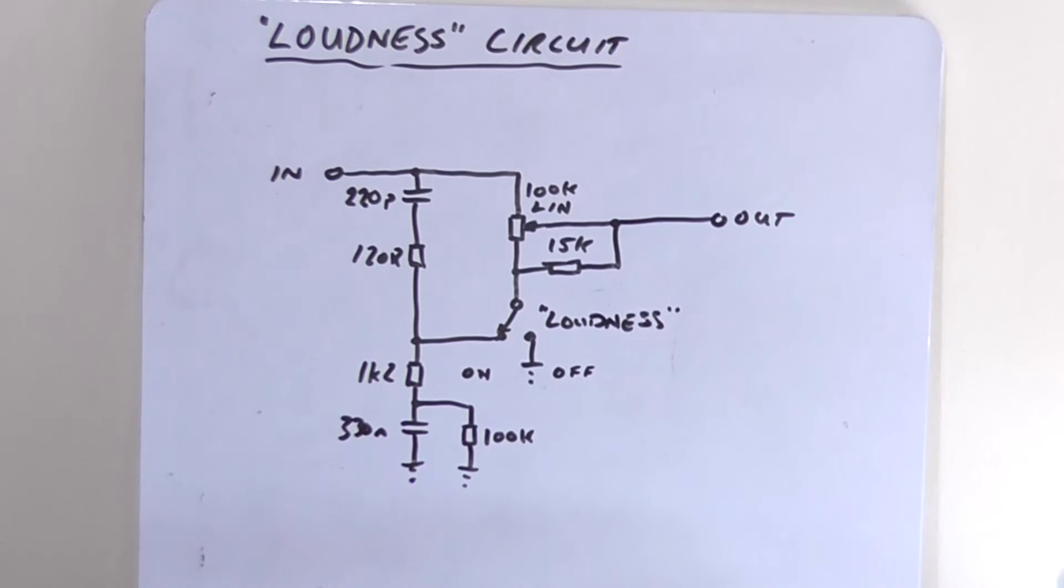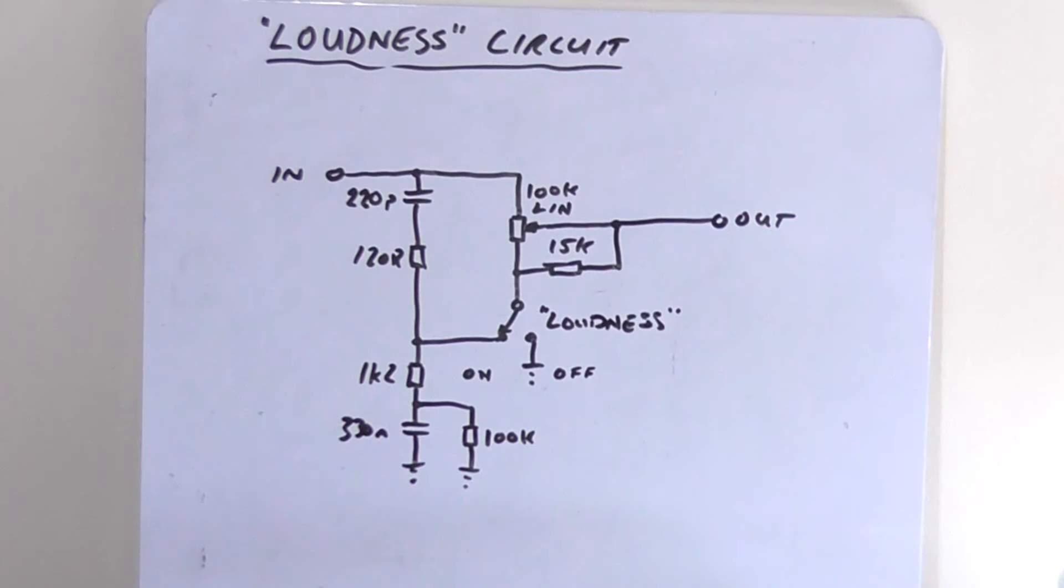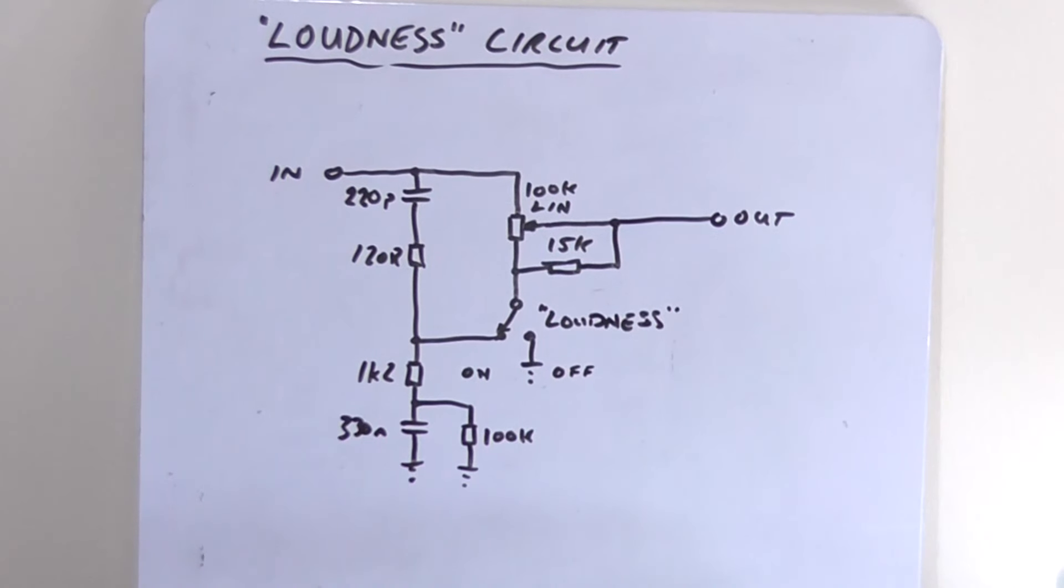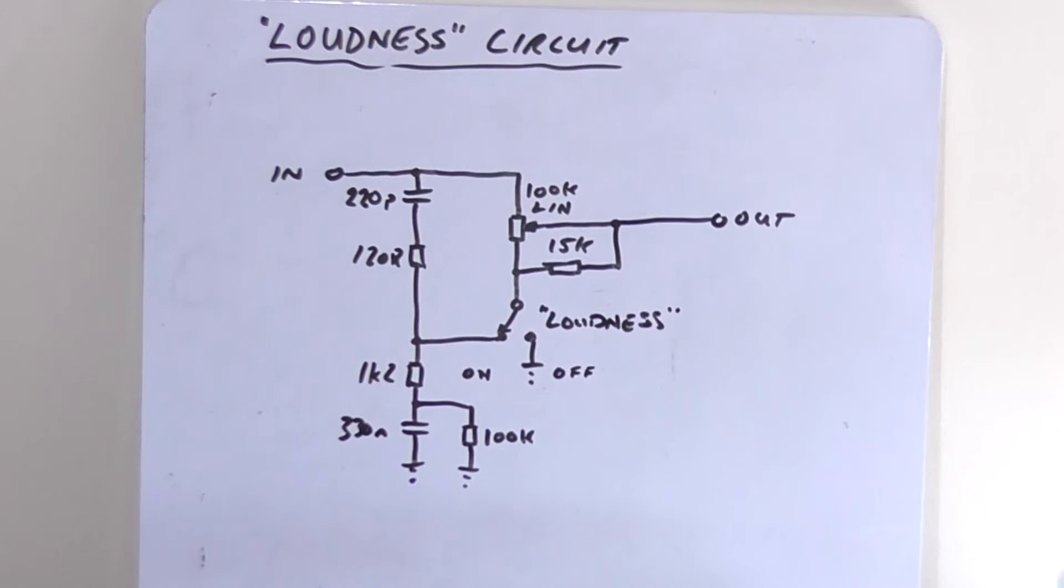Greetings, the Astro 30 here yet again with another experimentation video. Today I'm going to be looking at what is known as a loudness compensation circuit. It was used on older stereo amplifiers back in the 80s into the 90s, and then the control or the switch just ended up being deleted altogether.